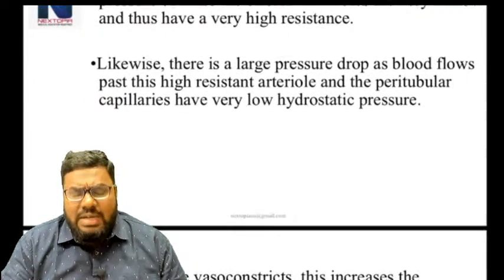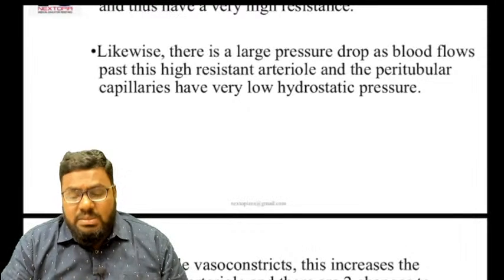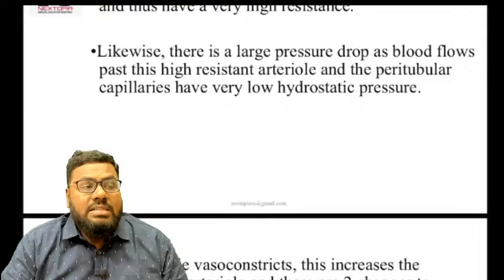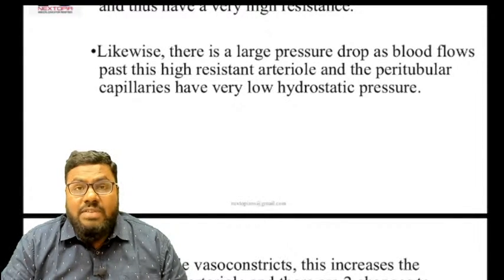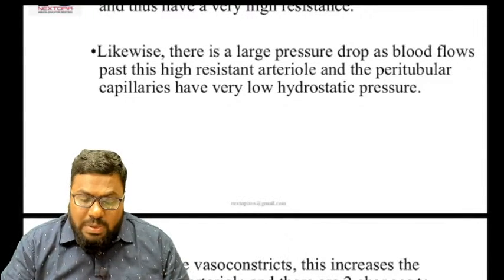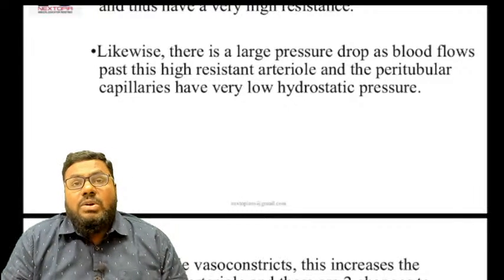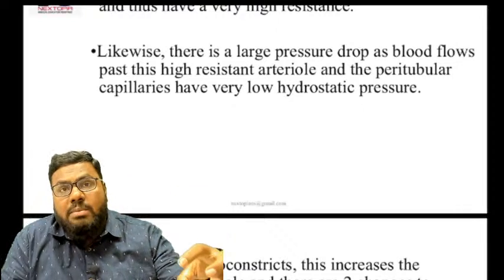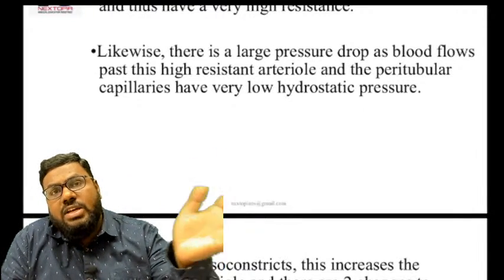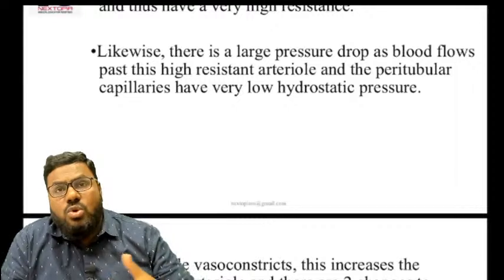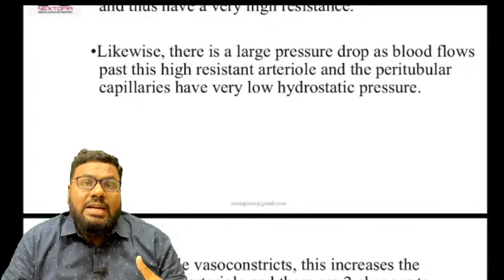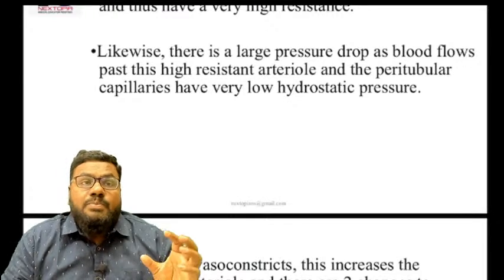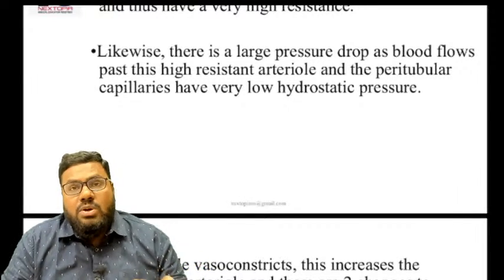There is a large pressure drop as blood flows through the high-resistance efferent vessel into the peritubular capillaries, which have very low hydrostatic pressure. So the glomerulus has very high hydrostatic pressure, and the peritubular capillaries have low hydrostatic pressure. Blood flows from the high-pressure glomerulus to the low-pressure peritubular capillaries.